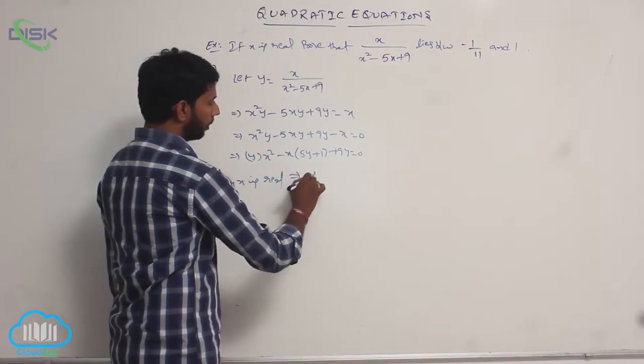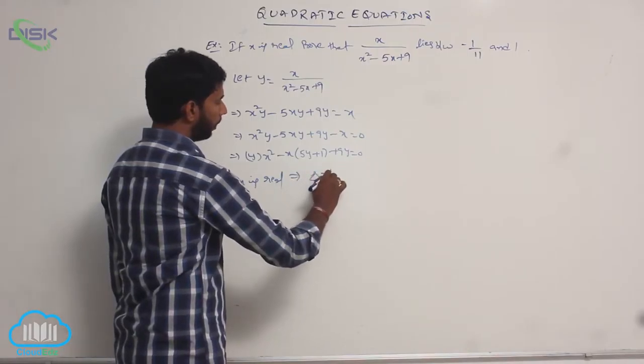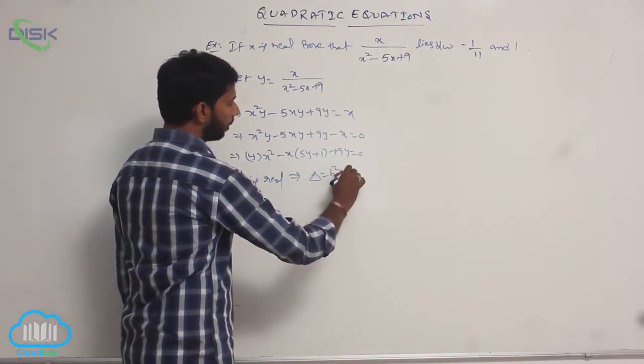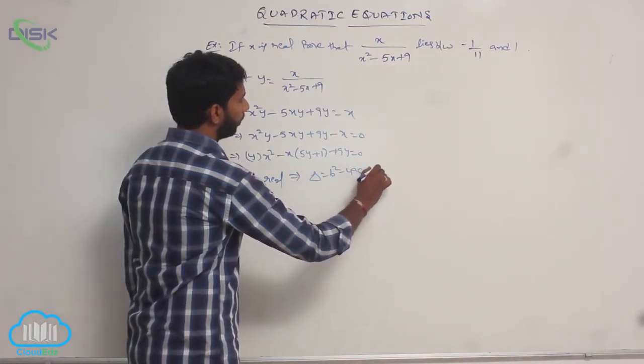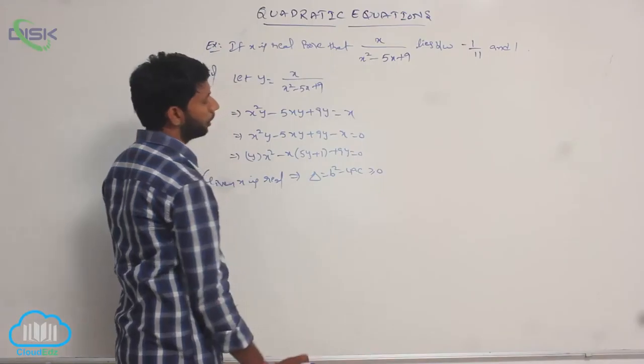Since x is real, that implies delta = b² - 4ac ≥ 0.